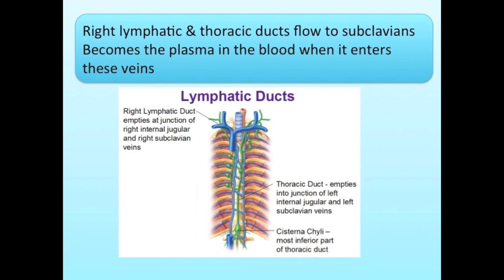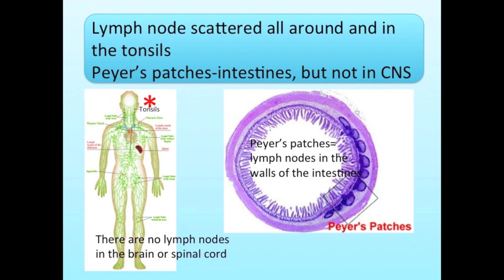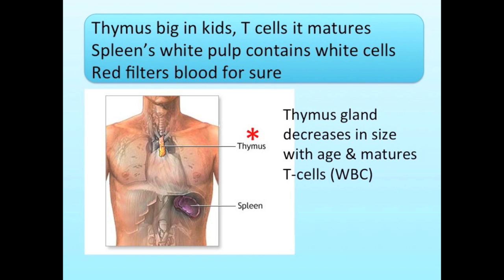When lymph enters these veins, it flows into nodes through the lymph sinuses, where macrophages and lymphocytes fight antigens. Lymph nodes are scattered all around and are also found in the tonsils and Peyer's patches in the intestines, but not in the CNS. The thymus is large in kids.